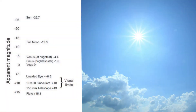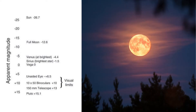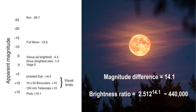Here I have shown the magnitudes of some known celestial objects. The brightest object in our sky is the Sun, with a magnitude of around −26.7. The next brightest object in the night sky is the Moon, with a magnitude of −12.6. The Moon is about 14.1 magnitudes higher than the Sun, meaning the Sun is about 2.512 to the power of 14.1 — that is 440,000 times brighter than the full Moon.